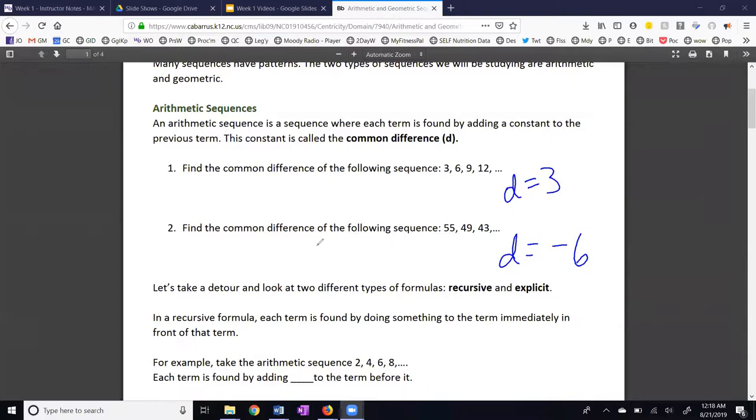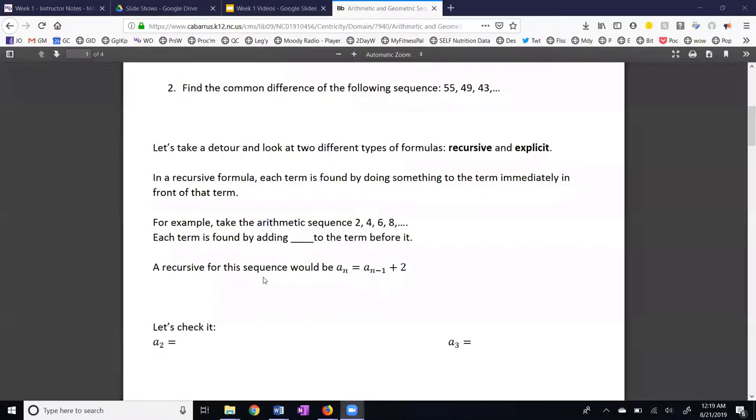Now we need to take a look at recursive and explicit formulas. In a recursive formula, each term is found by doing something to the term immediately in front of that term. So if we have 2, 4, 6, 8, and so on, each term is found by adding 2 to the term before it. And here is our formula.